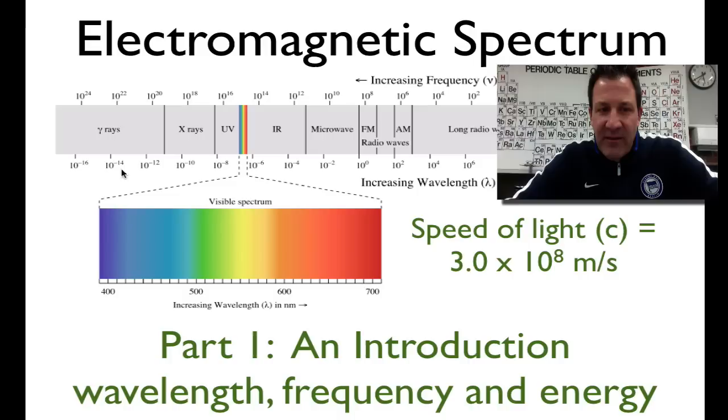Gamma rays, this is 10 to the minus 14. So that's a very short wavelength. And this is 10 to the eighth. That is a very long wavelength. Okay, so we move across. The wavelength increases.